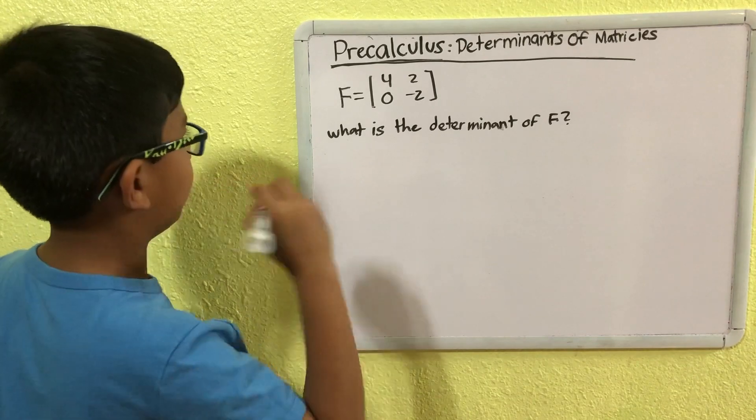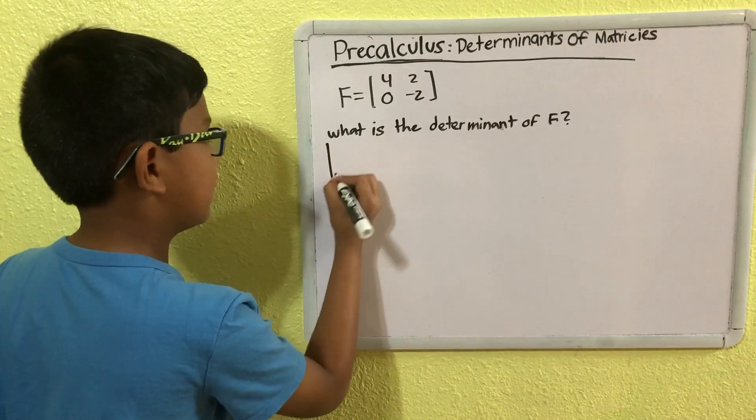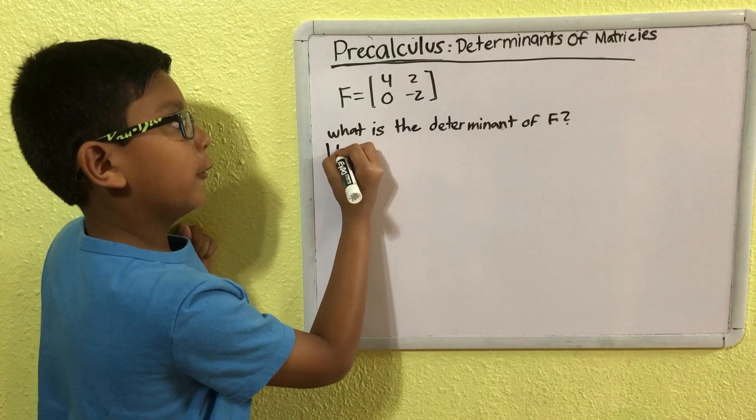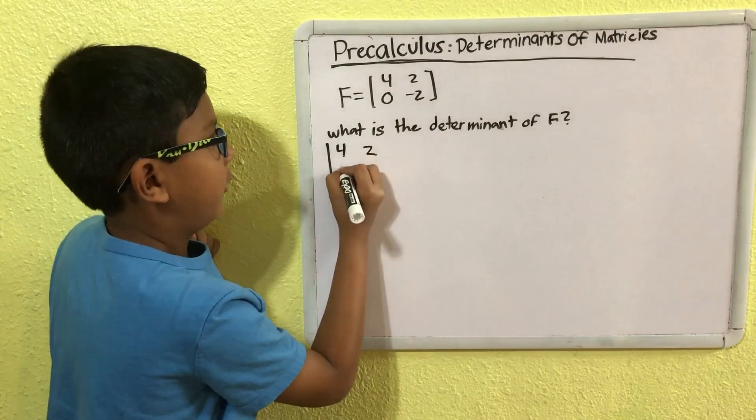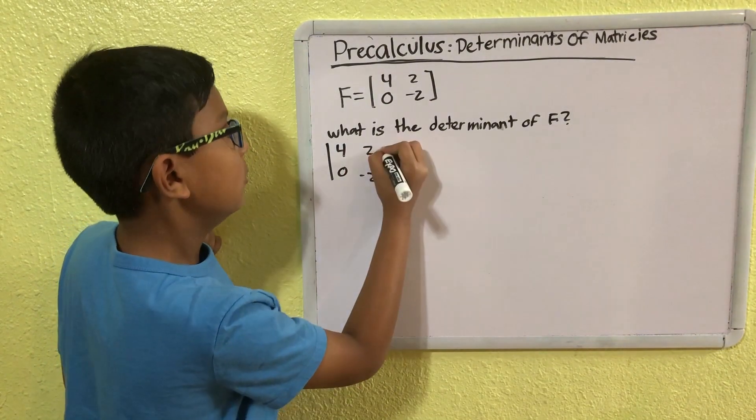So, what we first do is we rewrite it. So, we put 4, 2, 0, minus 2.